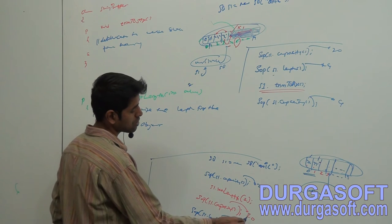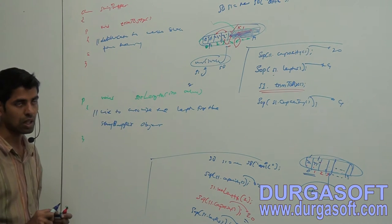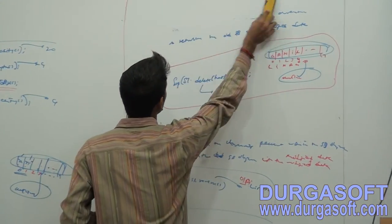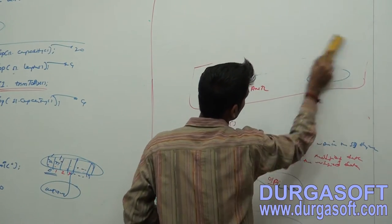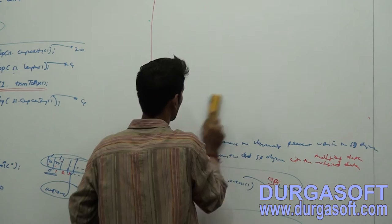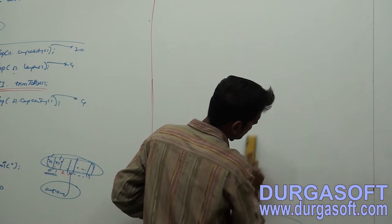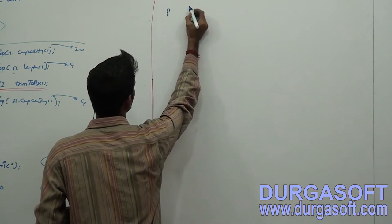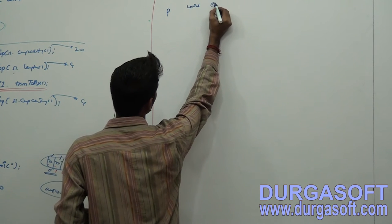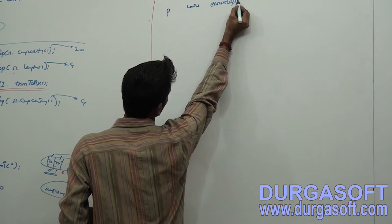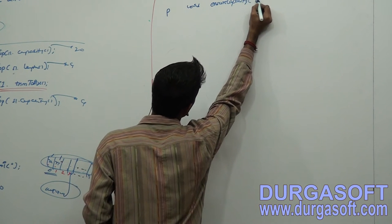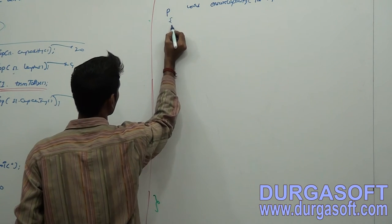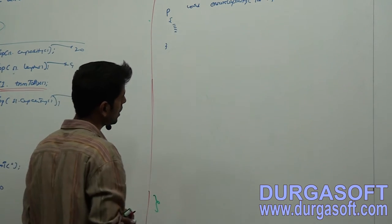After setLength(2), the length will be two and the capacity will still be 20. Now coming to another method — the ensureCapacity method. Its signature is: public void ensureCapacity(int capacity).